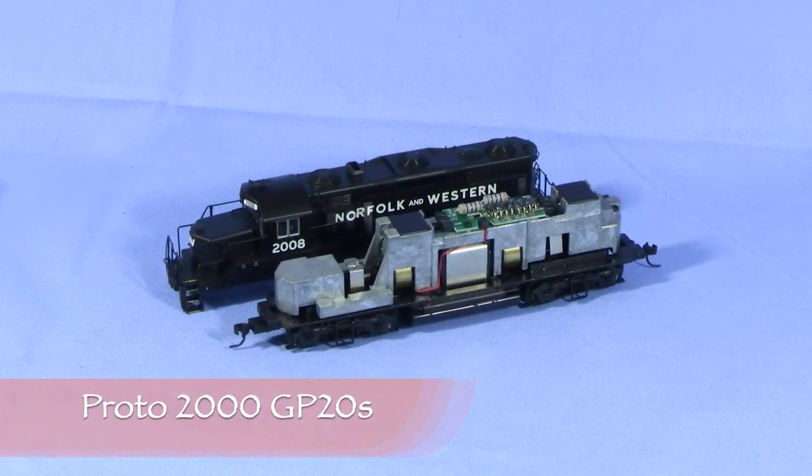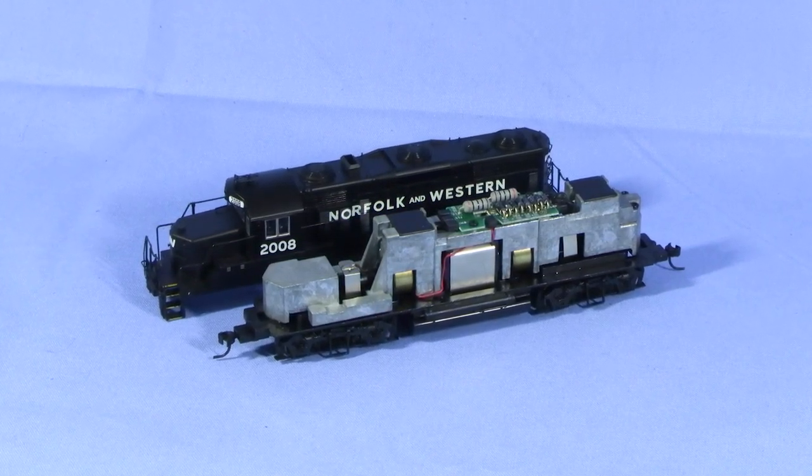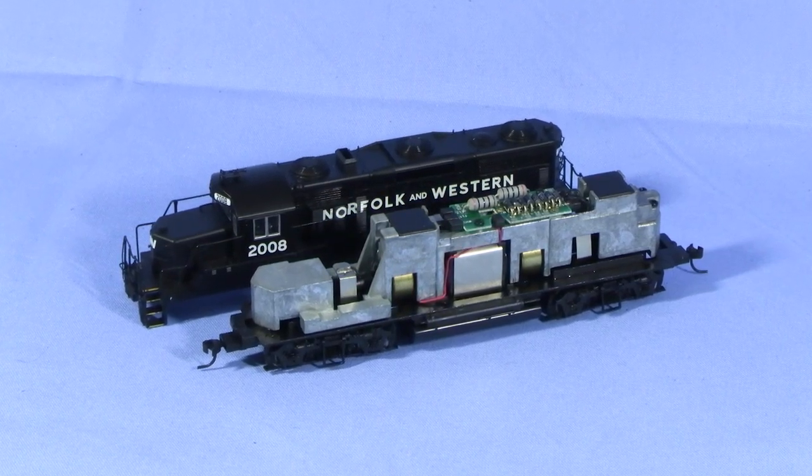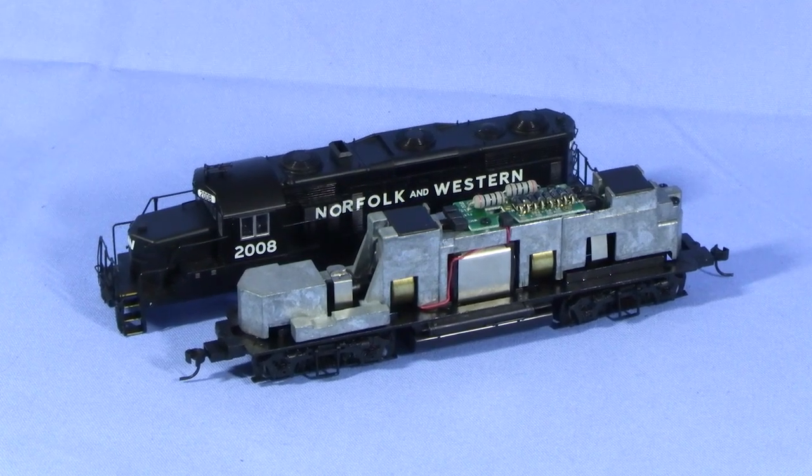I'll start with the Proto 2000 GP20 that has its shell off. Proto 2000 used to ship their locomotives that way, with the shell separate to be installed by the modeler. This one was still like this in the box when I got it, so it's probably never been used. Despite that, it has issues because of its age.